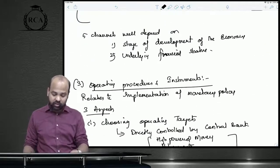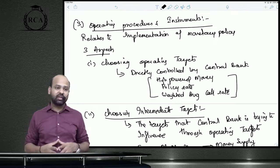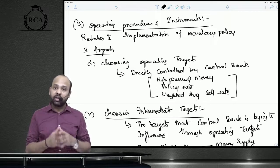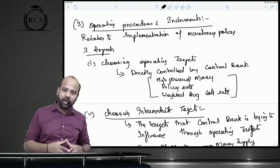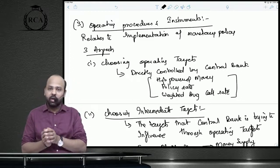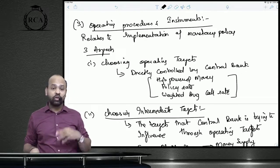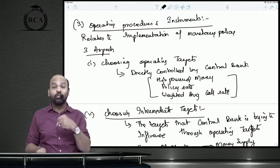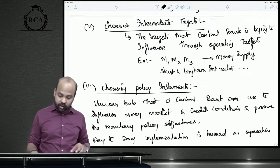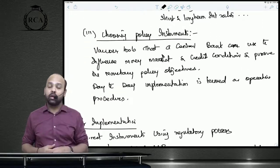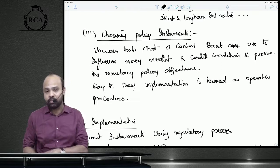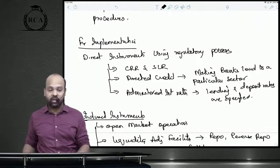Operating procedures relate to the implementation of monetary policy. There are three levels: operating targets (directly controlled by the central bank, such as monetary base, repo rate, and weighted average call rate), intermediate targets (influenced through operating targets, like money supply and short-term and long-term interest rates), and monetary policy instruments (the tools used to influence the money and credit market to achieve ultimate monetary policy objectives).